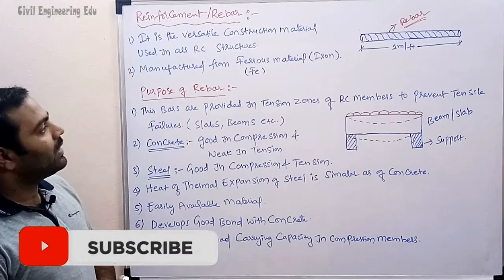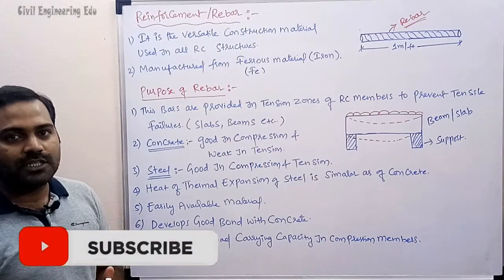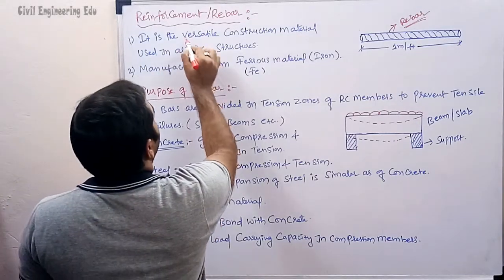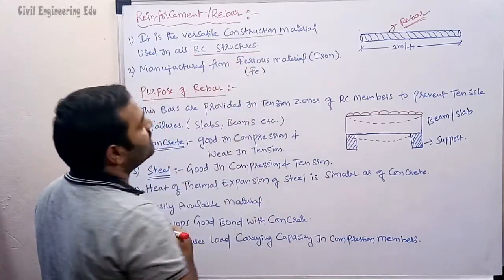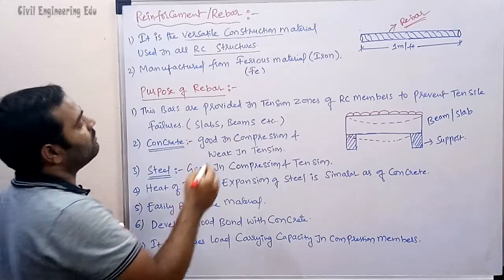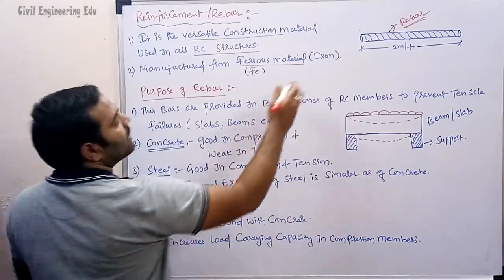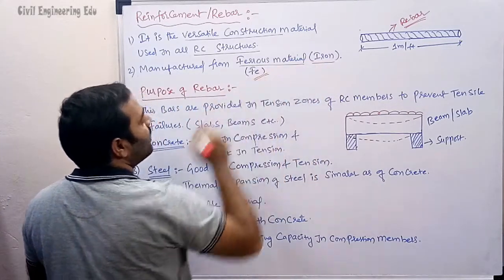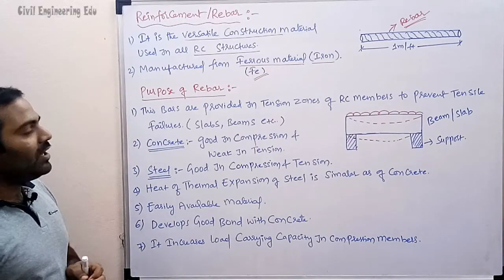Rebar is a versatile construction material which is used in all RC structures. It is manufactured from ferrous material — ferrous material is nothing but iron — and it is denoted by Fe.